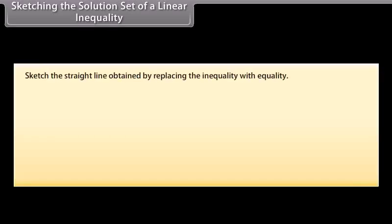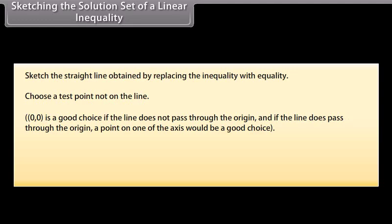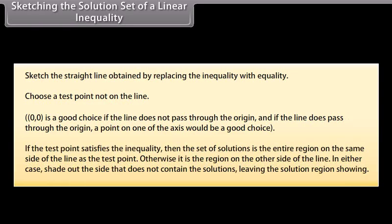To sketch a linear inequality: sketch the straight line obtained by replacing the inequality with equality. Choose a test point not on the line — (0,0) is a good choice if the line does not pass through the origin. If the test point satisfies the inequality, the solution set is the entire region on the same side of the line as the test point; otherwise, it is the region on the other side. Shade out the side that does not contain the solutions, leaving the solution region showing.